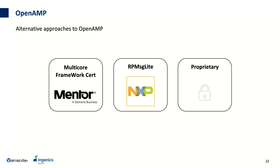There are other approaches besides OpenAMP. The Multicore Framework from Mentor is an option but is not open source. From NXP there is RPMsg Lite — a very small middleware that doesn't require much memory, making it great for Cortex-M4 with limited memory — but RPMsg Lite only provides inter-processor communication, not lifecycle management or proxy infrastructure. A third approach is a proprietary solution, but porting it to another system would generate significant effort.